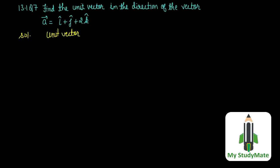Unit vector along vector A is equal to A cap, which equals vector A divided by its magnitude. Now, magnitude of vector A is equal to 1 square plus 1 square plus 2 square, which is 1 plus 1 plus 4, equals under root 6.